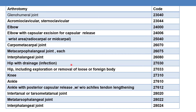For arthrotomy of the knee joint, the CPT is 27310. For arthrotomy of the ankle joint, the CPT is 27610; and for arthrotomy of the ankle with posterior capsular release with or without tendon lengthening, it is 27612. For intertarsal or tarsometatarsal joint, the CPT is 28020; for metatarsophalangeal joint, 28022; and for interphalangeal joint, 28024. These are the arthrotomy CPTs covering all joints from head to foot in the musculoskeletal region.